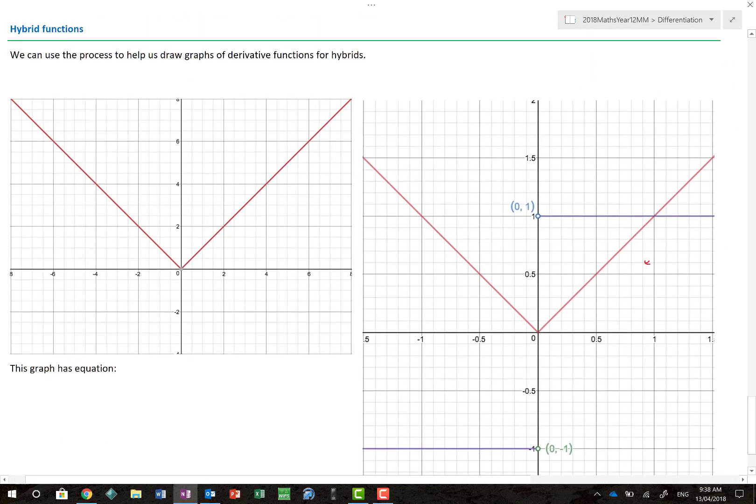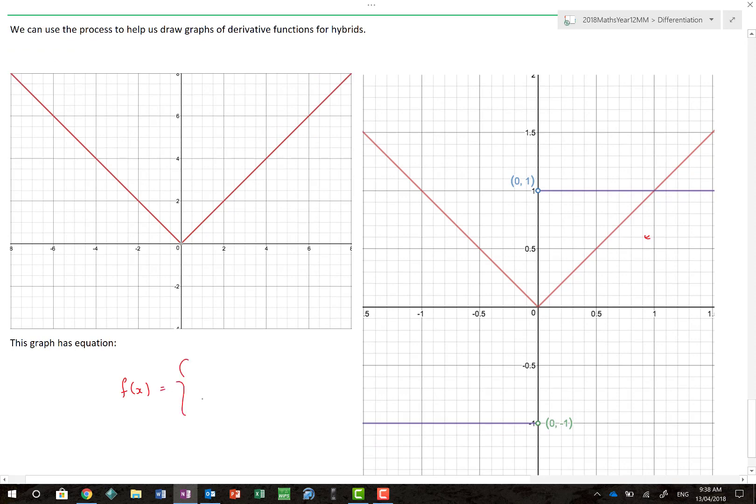Hybrid functions are really important, and this is the last section here. Alright, we can use the process to help us draw graphs of derivative functions for hybrids. If you remember, a hybrid function is just a way of writing a graph that's split up into a number of different sections. So, we have the graph of x for values of x is greater than 0, and for negative x, for x is less than or equal to 0. Now, a lot of people say to me, does it matter where you put the less than or equal sign? No, as far as I'm concerned, it doesn't, just as long as you don't replicate it. If I did that, then unfortunately that would very much be wrong, because you can't have both values, including 0.